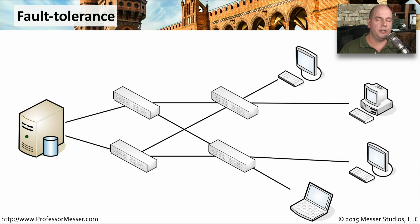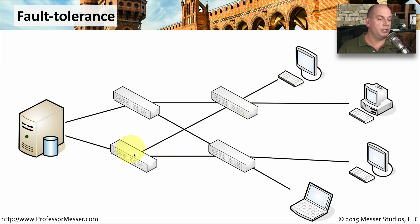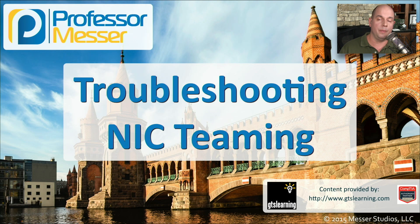A similar configuration, but with a different architecture, is one where we have simple fault tolerance enabled. We have multiple interfaces still inside of the server, but instead of connecting them both to a single switch, we connect them to multiple switches. This provides even more fault tolerance, because if we lose an entire switch, we still have a way to communicate out to the rest of the network. Many switches will allow you to configure the network in a way that also provides load balancing across these connections. So the server can send and receive information over any of these links, but if any of them go down, it will continue to stay up and running by sending all of the data over the remaining connections.